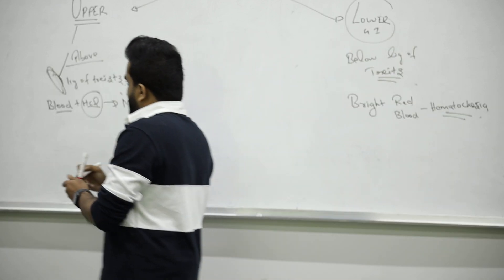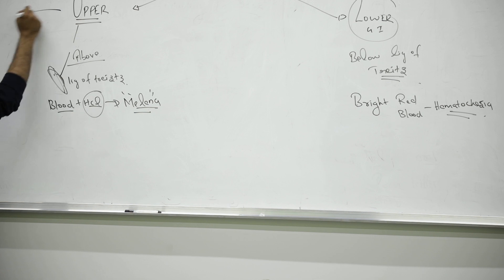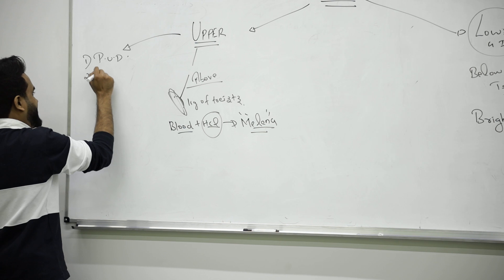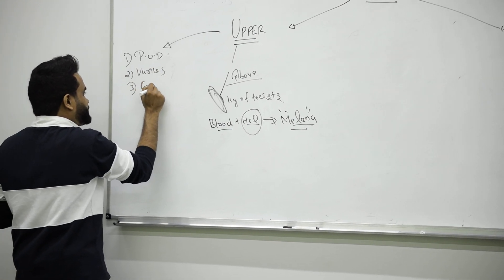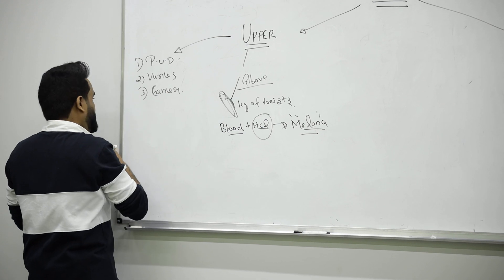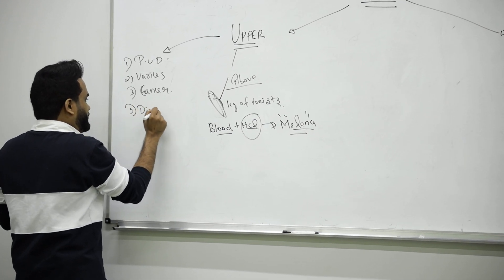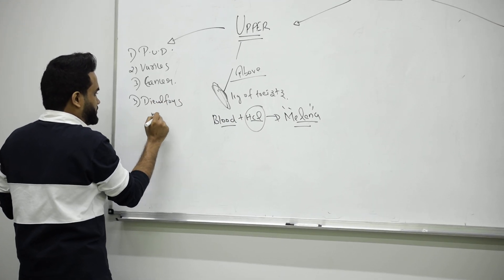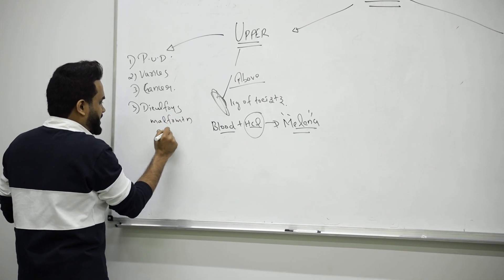There are different scenarios that will cause upper GI bleed. These include peptic ulcer disease, varices, cancer, and arteriovenous malformation.